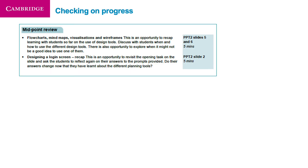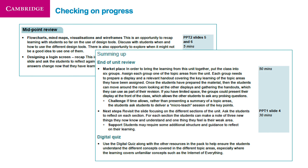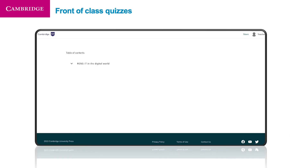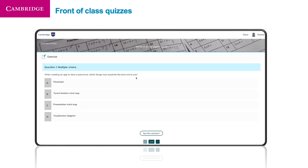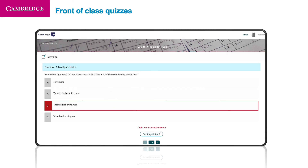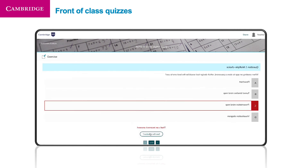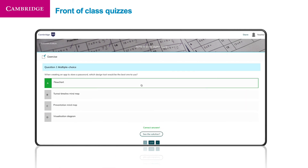Encouraging students to reflect on their learning is prompted within the teaching notes, with midpoint topic area and end of unit review activities. Straightforward digital quizzes can help you assess students' knowledge and understanding for each unit. These key concept quizzes can be displayed front-of-class on whiteboards and used as formative assessment opportunities to check whole-class understanding. Solutions are provided as well as an explanation of why the other options are not correct. Students can also find more key concept quiz questions within the revision guide.